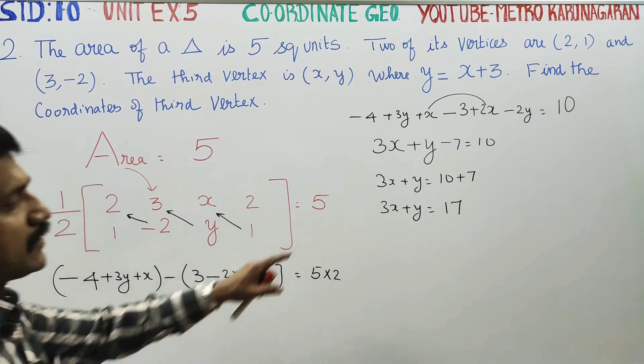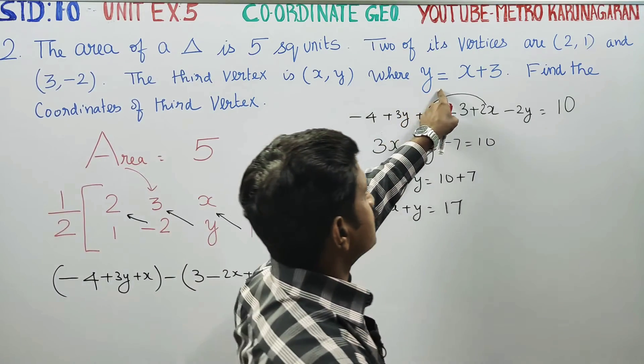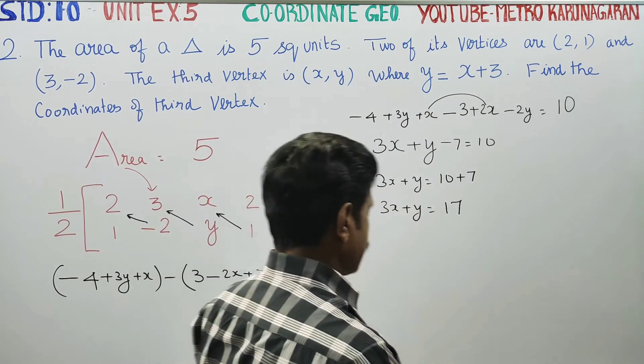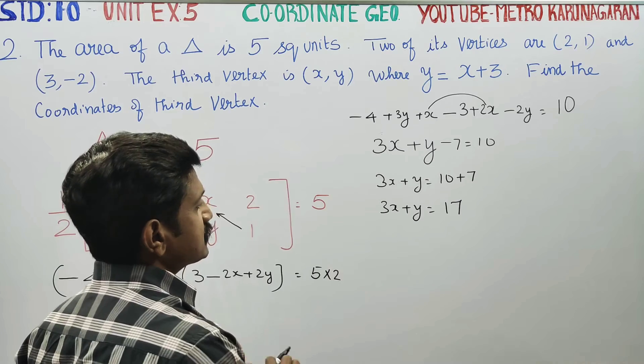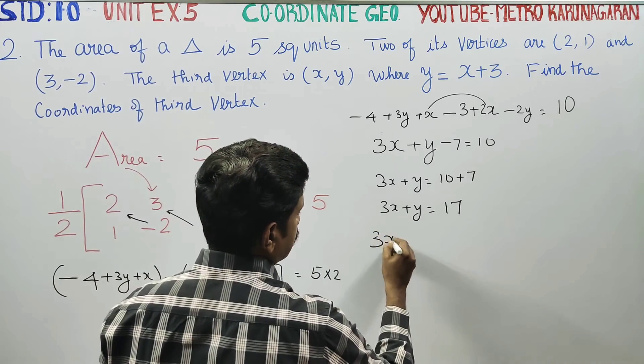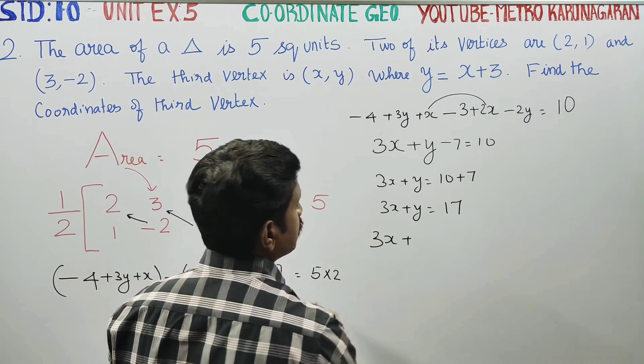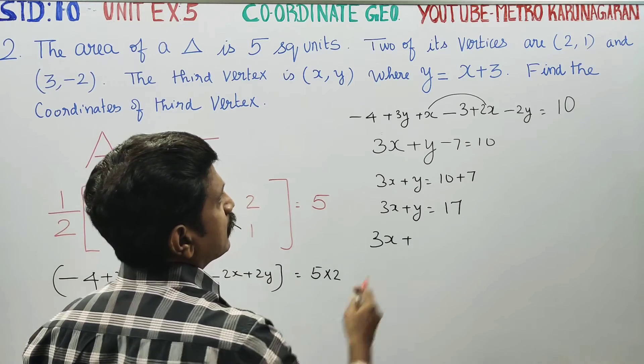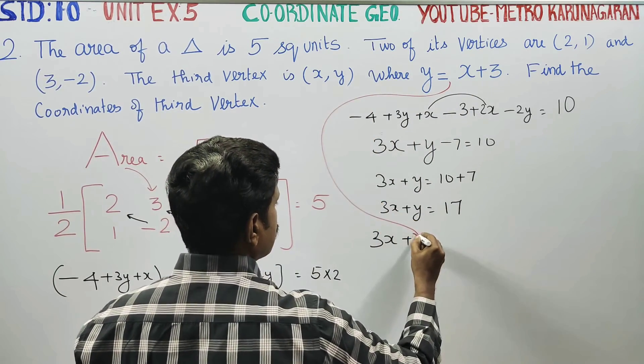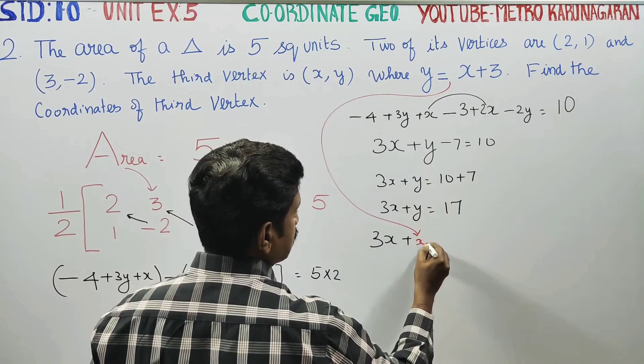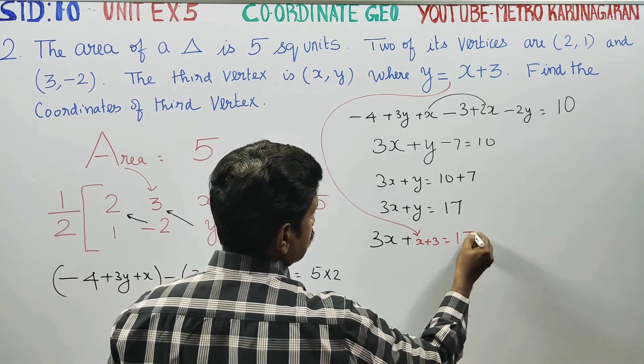One equation is y is equal to, the given value is y is equal to x plus 3. Substitute this: 3x plus, where y is, substitute x plus 3 is equal to 17.